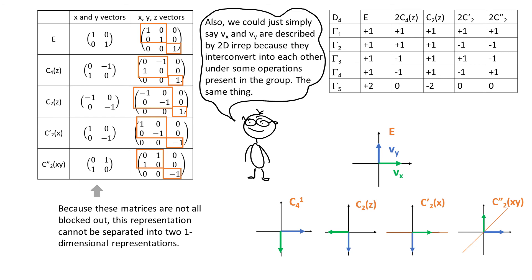Please notice that the explanation using block diagonal matrices is the most elegant. But we could also say that the reason why the z vector is described by one-dimensional EREP is that the z vector always transforms into itself plus 1 or into the negative of itself minus 1 as a result of symmetry operations present in D4 group. On the other hand, x and y vectors interconvert into each other at least under some of the symmetry operations present in the group. And that's why they are described by two-dimensional EREP.